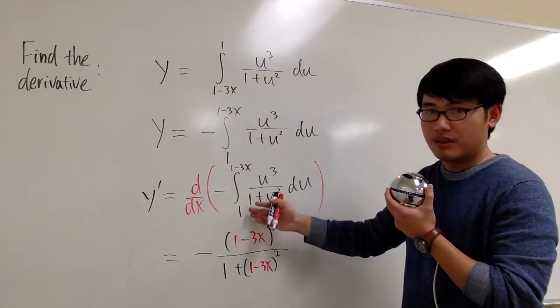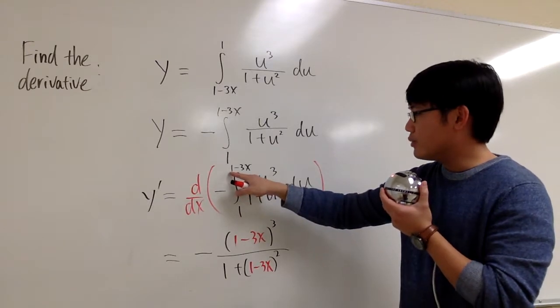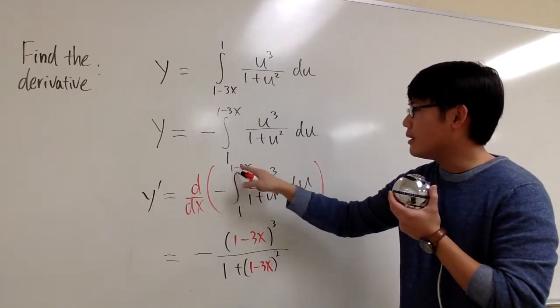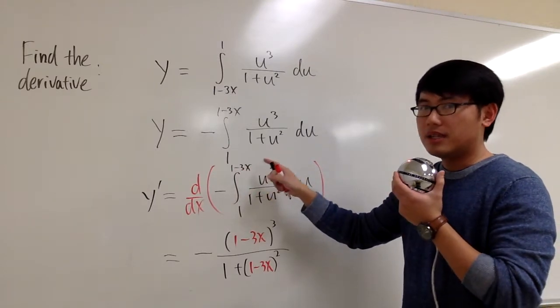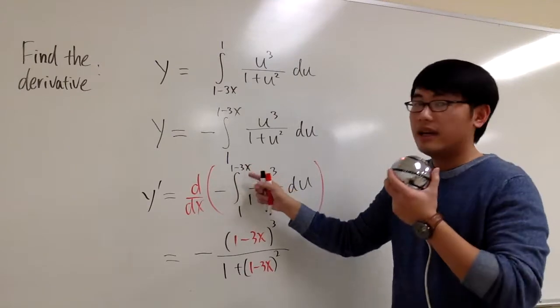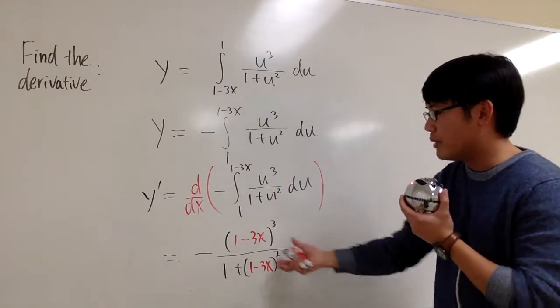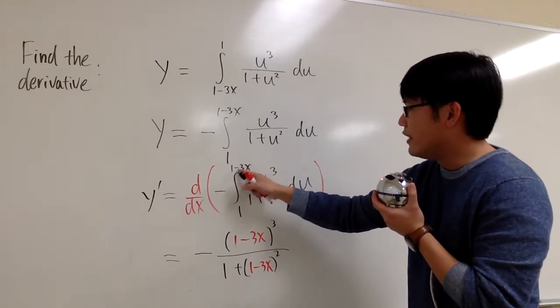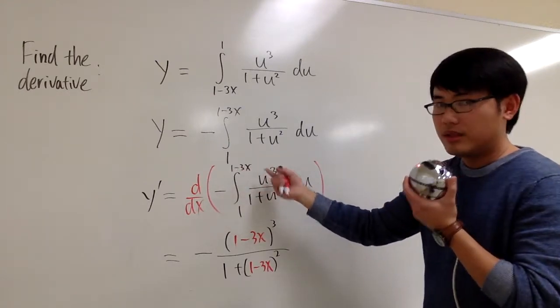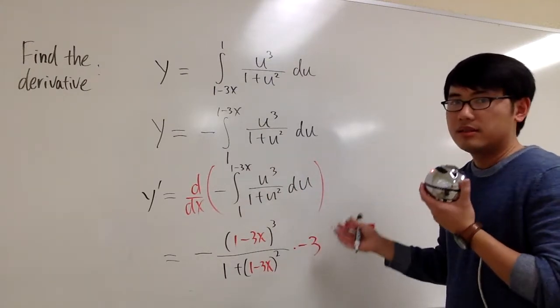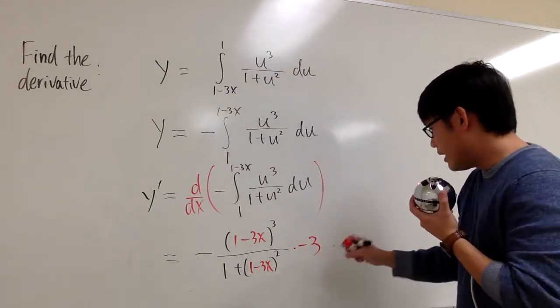You have to look at the limits right here. Because we don't just have a regular x, we have 1 minus 3x. Because of the chain rule, we have to look at this and then take the derivative of that and multiply with what we have right here. Derivative of 1 is 0. Derivative of negative 3x is negative 3. So we are going to multiply by negative 3, because of the chain rule.